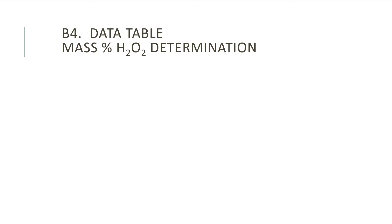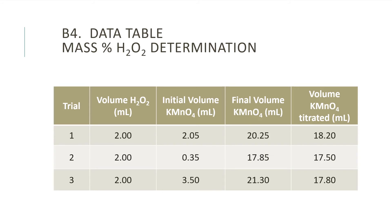B4: Data Table — Mass Percent of Hydrogen Peroxide Determination. In this data table, rows are separated by trial number. The second column shows the volume of the hydrogen peroxide solution, which should be constant. The third column shows the initial volume of the permanganate solution in the burette. The fourth column is the final volume of the burette of the permanganate solution. The fifth column is the volume of the permanganate solution used in the titration. The sixth column is the color description of the endpoint.